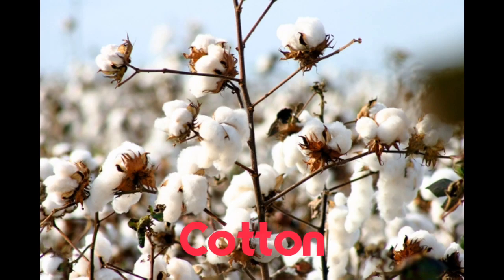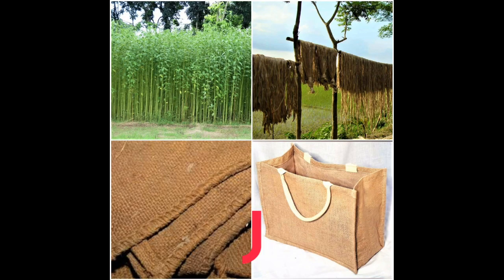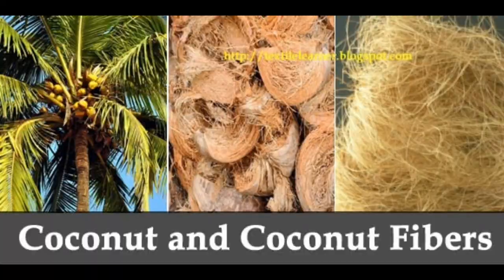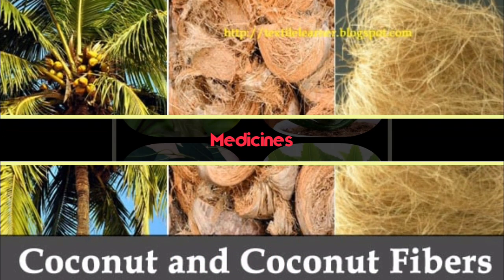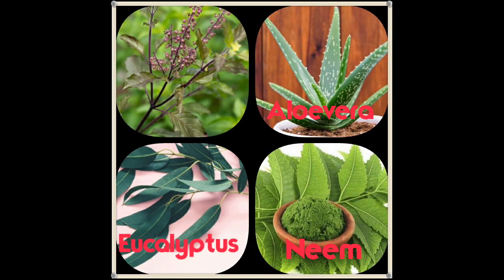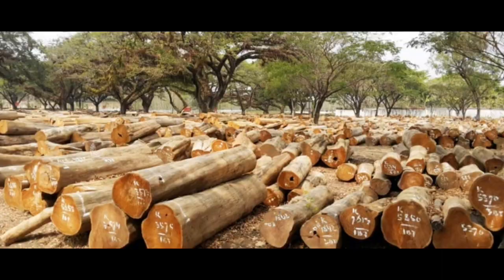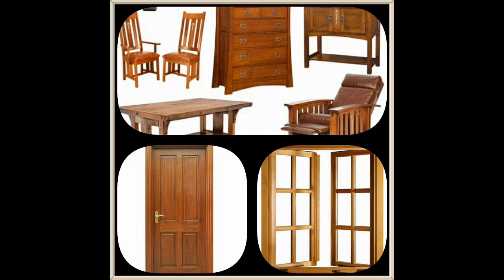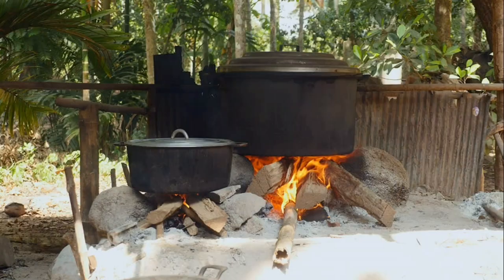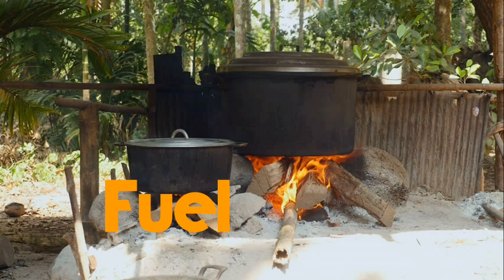Cotton, jute, and coir are some examples of fiber plants. Plants like tulsi, neem, eucalyptus, and aloe vera are used as medicines. Wood from trees like teak and deodar are used to make furniture, doors, and windows.